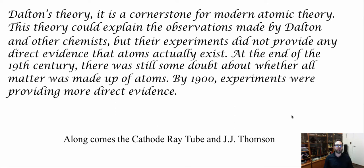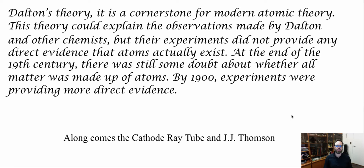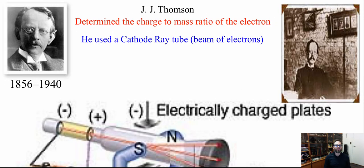By the 1900s, experiments were providing more direct evidence, and this is where the cathode ray tube and JJ Thomson come in. With applications from electricity and magnetism, JJ Thomson would expand on Dalton's theory, solve one of its problems, and find something called an electron. He did that using a cathode ray tube.